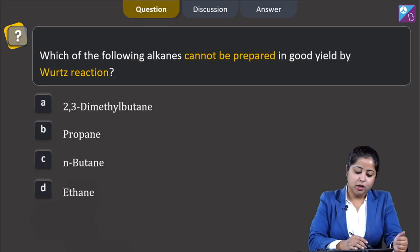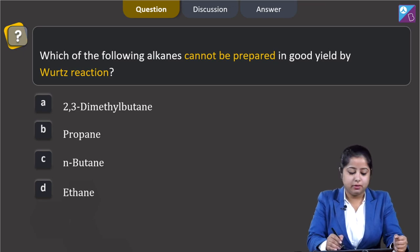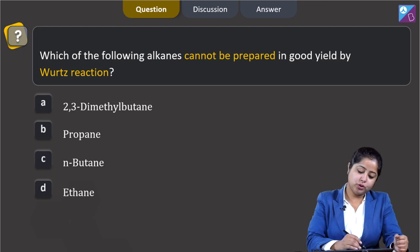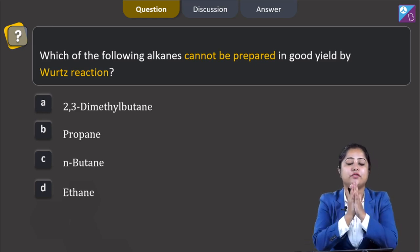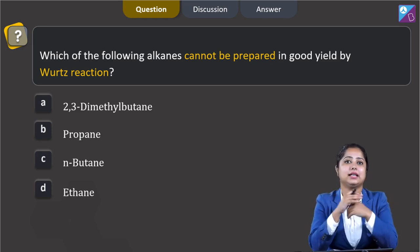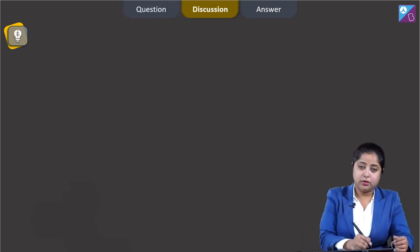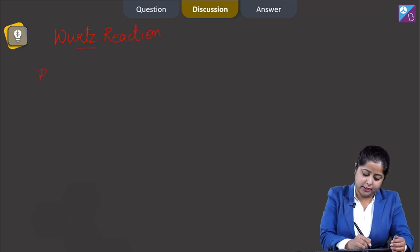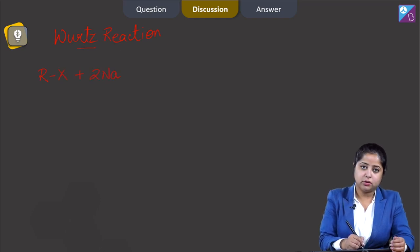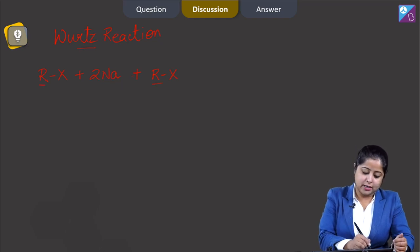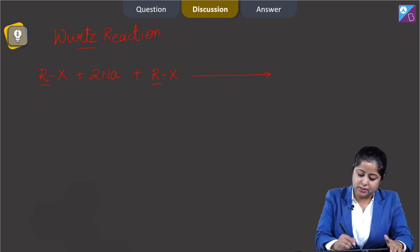Let us move to the next question, students. Which of the following alkanes cannot be prepared in good yield by Wurtz reaction? The options are: 2,3-dimethylbutane, propane, n-butane, and ethane. For this question, you have to understand that Wurtz reaction is used to prepare symmetrical alkanes in good yield; unsymmetrical alkanes are generally not prepared in good yield by Wurtz reaction. I am writing the Wurtz reaction: taking an alkyl halide R–X + 2Na + R–X — since the two alkyl groups are the same — in the presence of dry ether gives R–R.